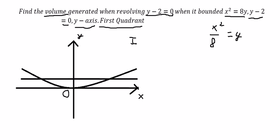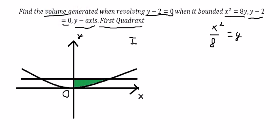The area we need to find is this shaded region here. They revolve about the line y minus 2, that's y equal to 2. So we can now create the formula.